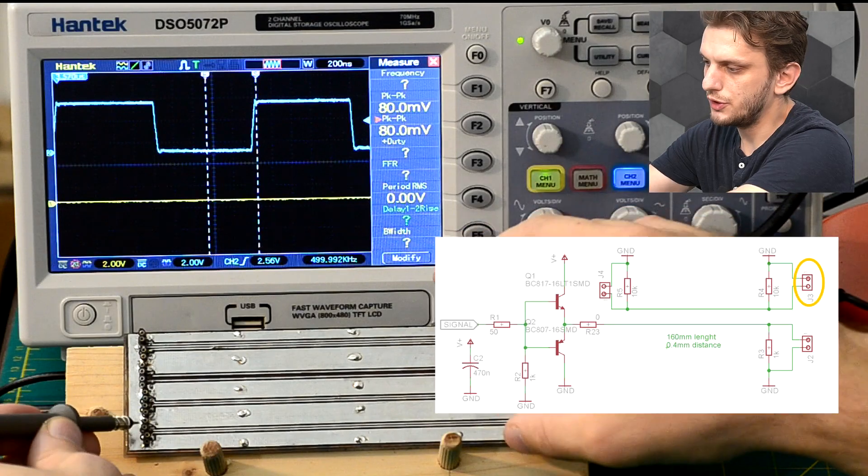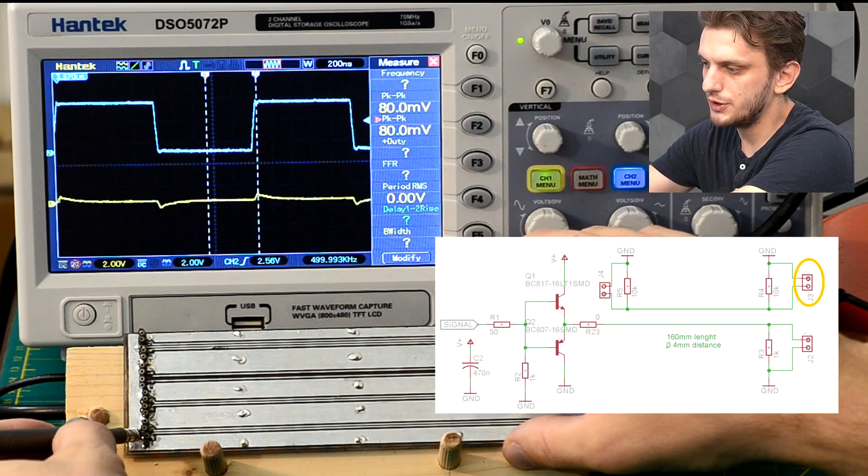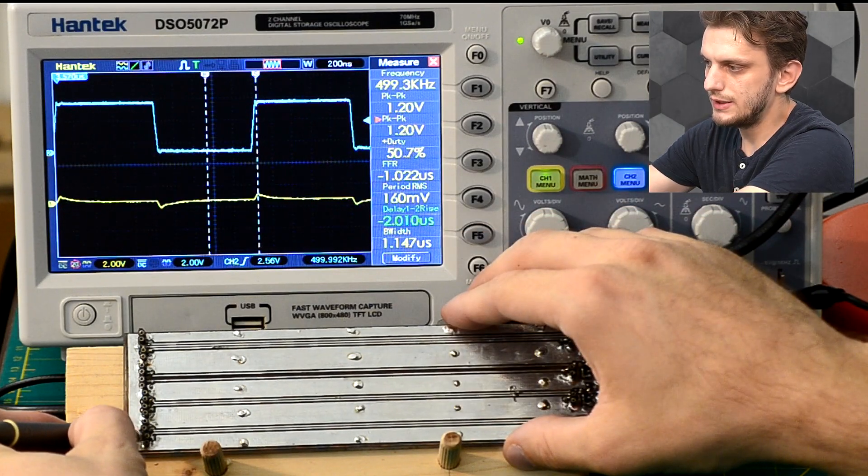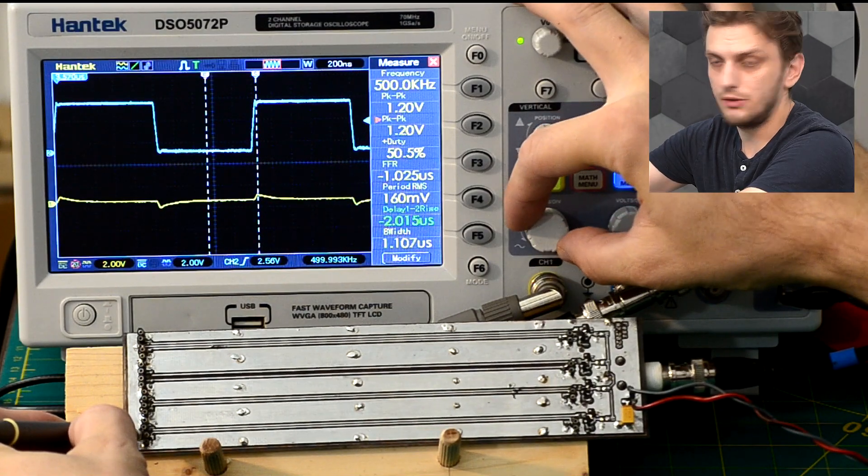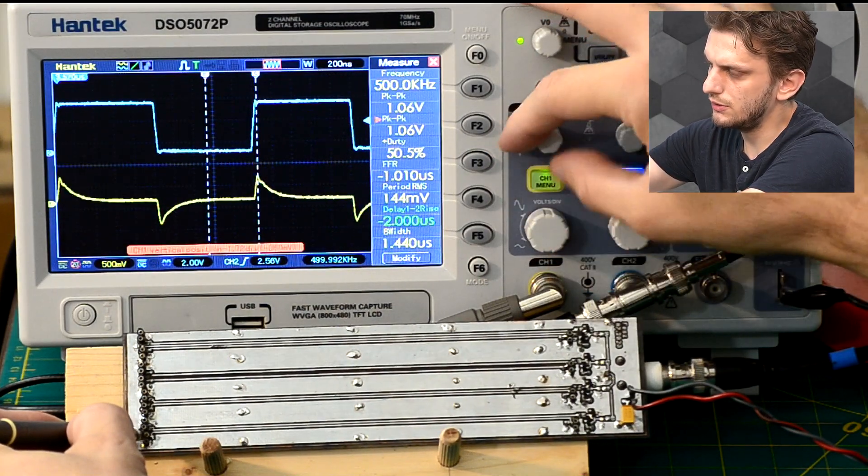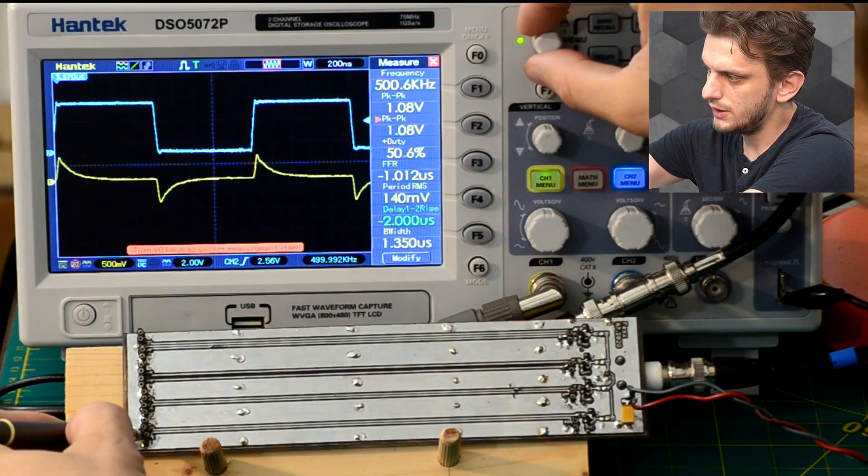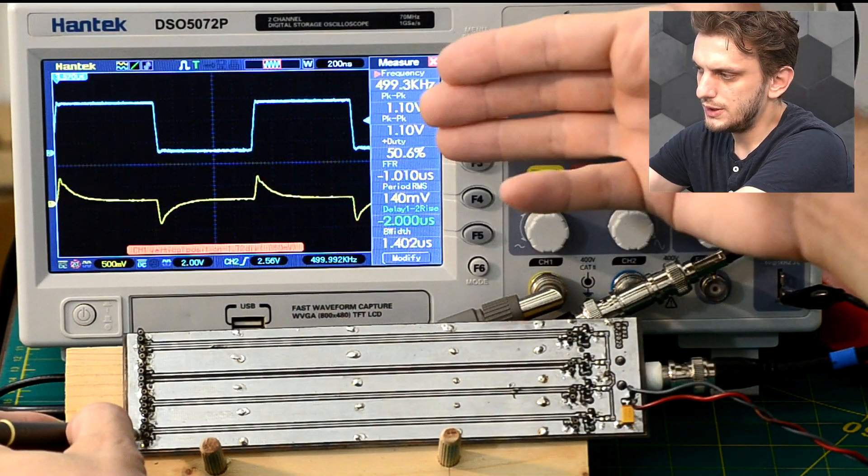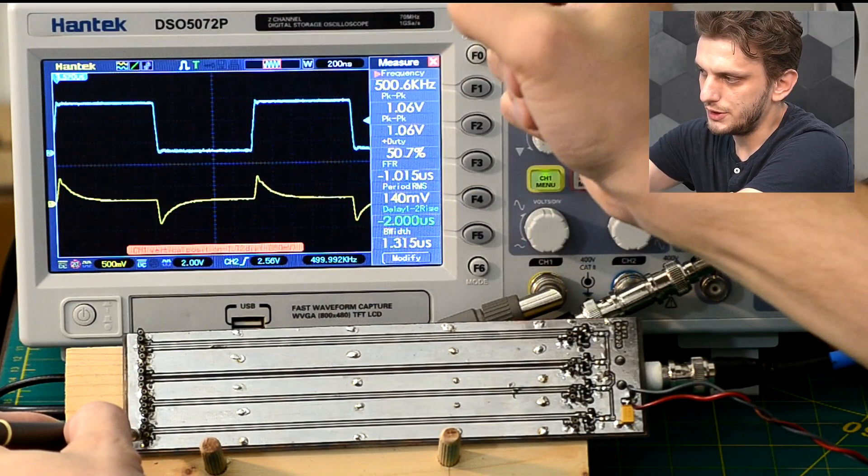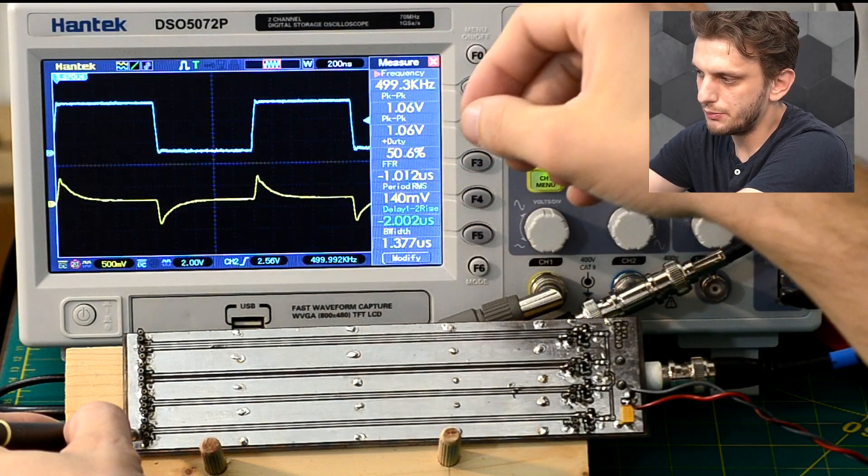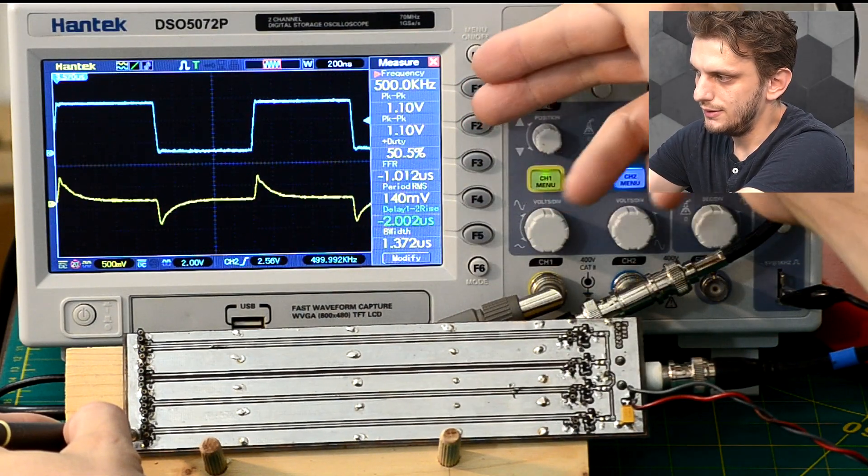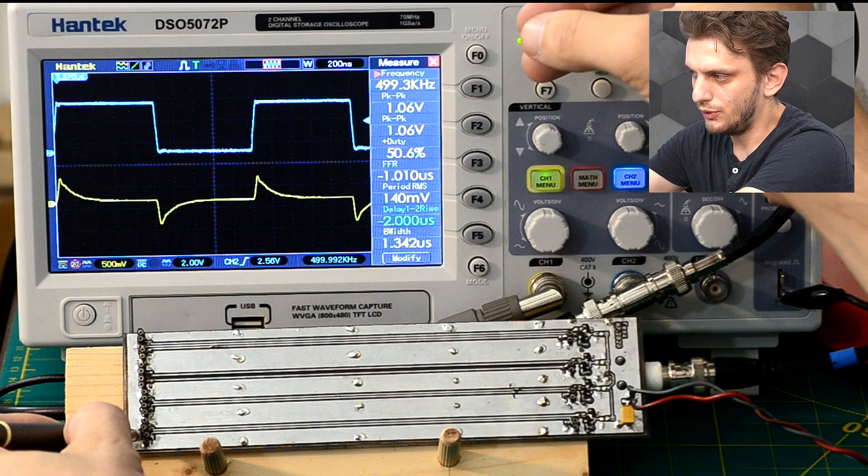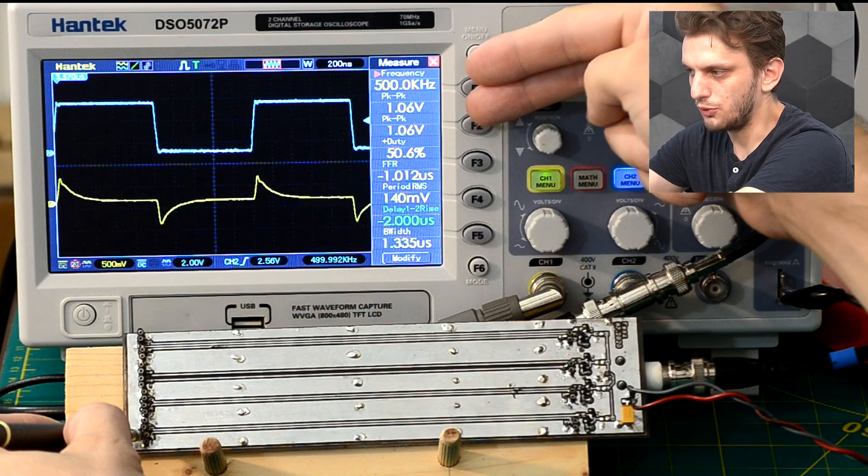Now, if we look at what's going on on the 10 kilo-ohm resistor, well, it's not as clean as we would expect it to be. So if I just increase the signal a bit, we can see that during our transitions, we have certain spikes appearing, and these have a total peak-to-peak voltage of more than a volt.